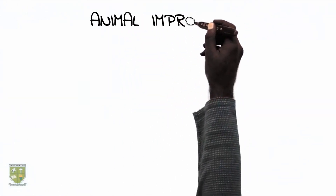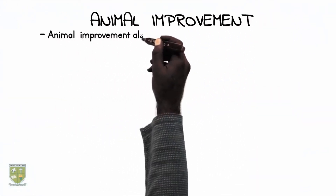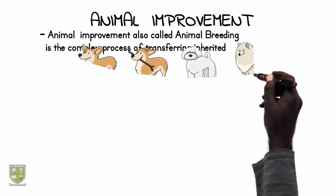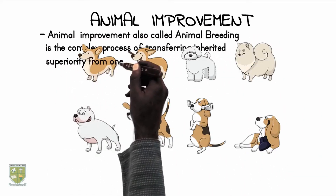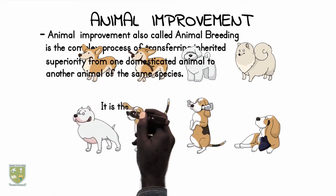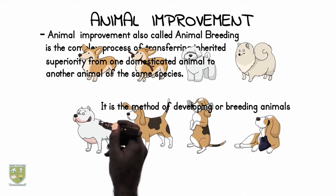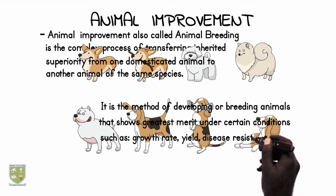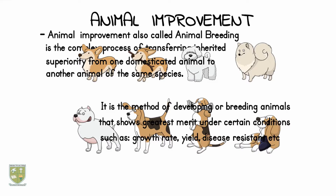Definition of Animal Improvement. Animal Improvement, which can also be referred to as animal breeding, can be defined as the complex process of transferring an inherited superiority from one domesticated animal to another animal of the same species. In other words, it refers to the methods of developing and breeding animals that show the greatest merit under certain conditions such as growth rate, yield, disease resistance, etc.